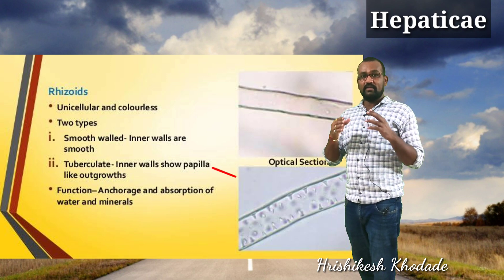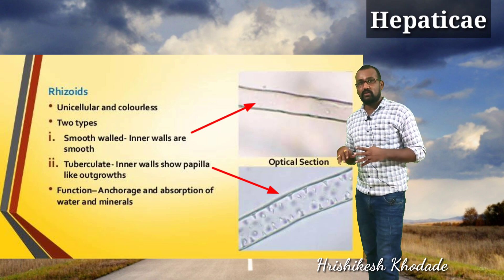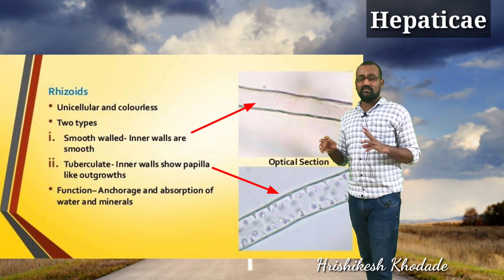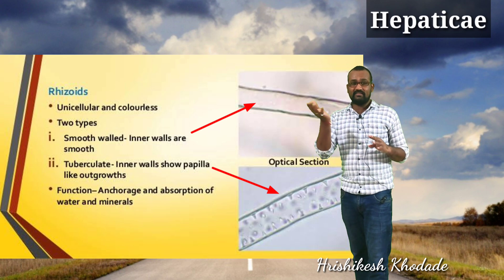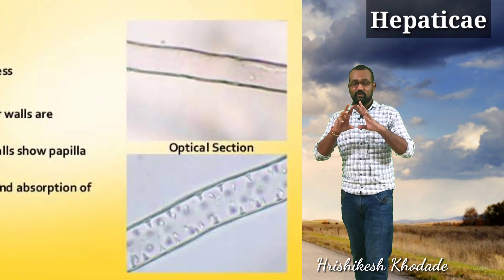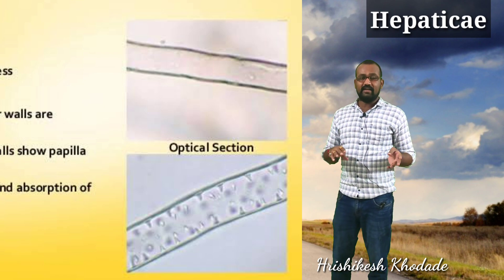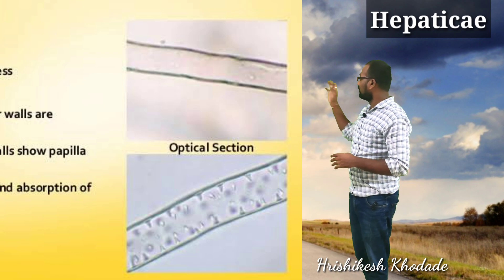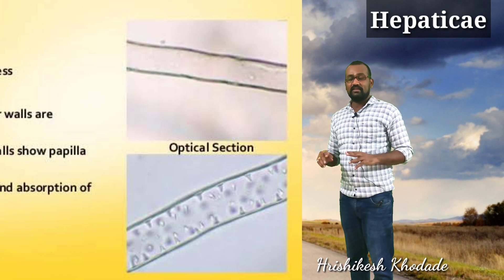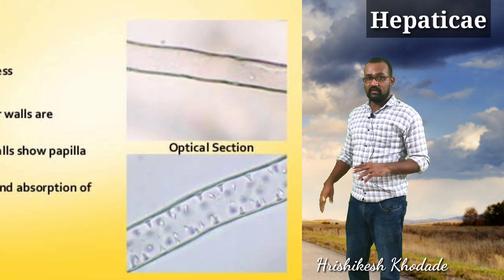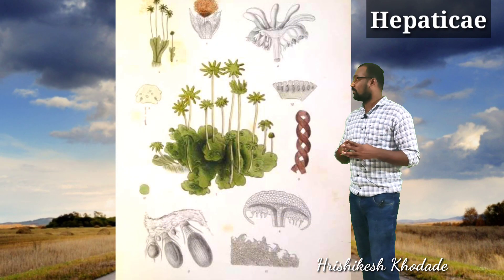The rhizoids in Marchantia — that is liverworts or Hepaticae — are of two different types: tuberculated and smooth-walled rhizoids. If the rhizoid shows some complex internal structure it is tuberculated; if it is very simple, it is smooth-walled. As shown in the figure, this difference is easy to recognize and identify.